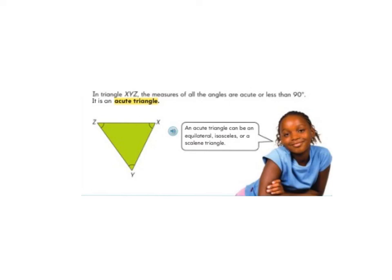When thinking about the angles in a triangle, it's important to remember that the three angles of a triangle will add up to 180 degrees.